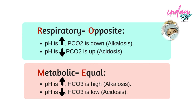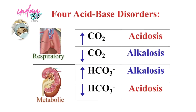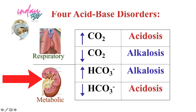So when pH is high, pCO2 is down — that is alkalosis, and it is in the respiratory. pH is low, pCO2 is up — that is acidosis. Remember that if we say respiratory, we are speaking about the lung. And while we speak about metabolic, it is always the kidneys.